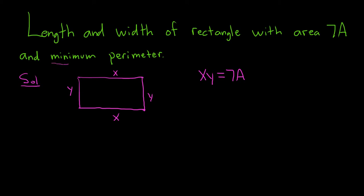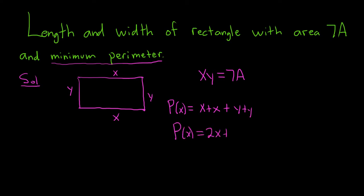We need the perimeter to be as small as possible, so our goal is to minimize the perimeter. Let's write a formula for it. P of x, as a function of x, is the perimeter — you add up all the sides: x plus x plus y plus y, so p of x equals 2x plus 2y.